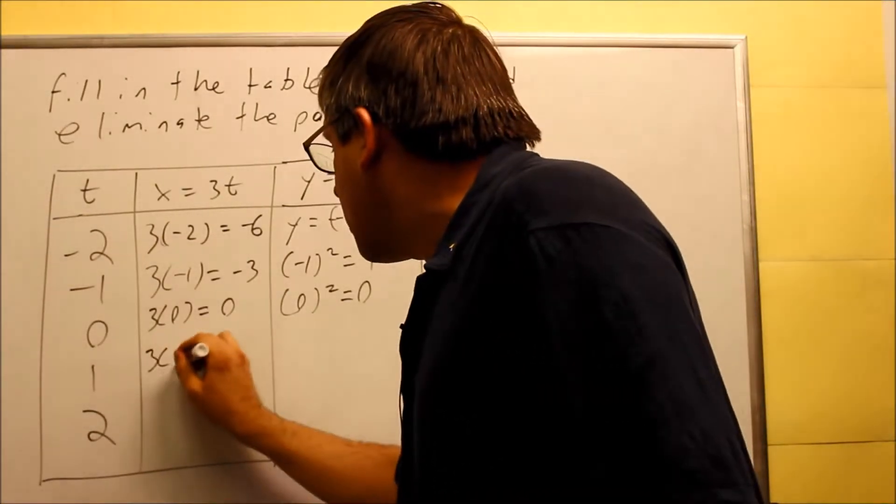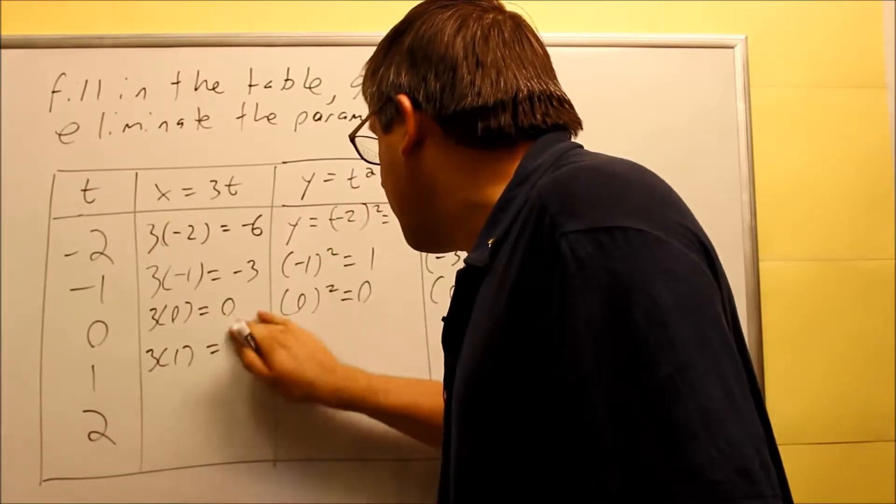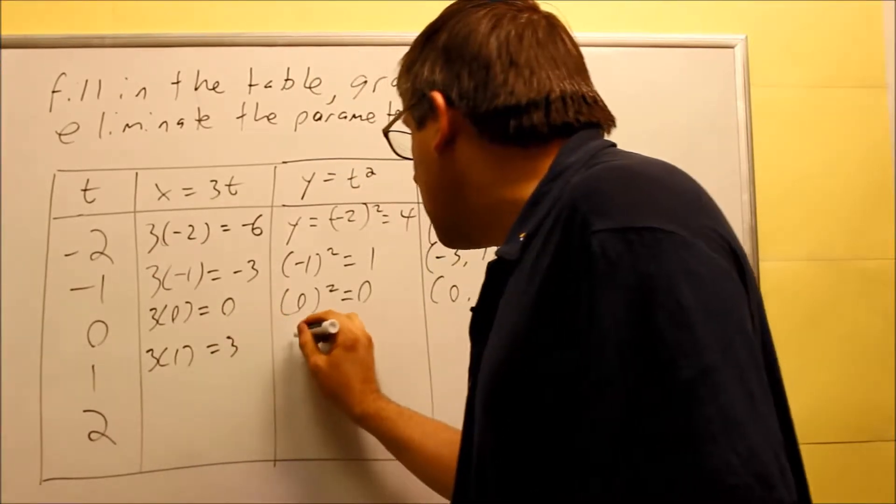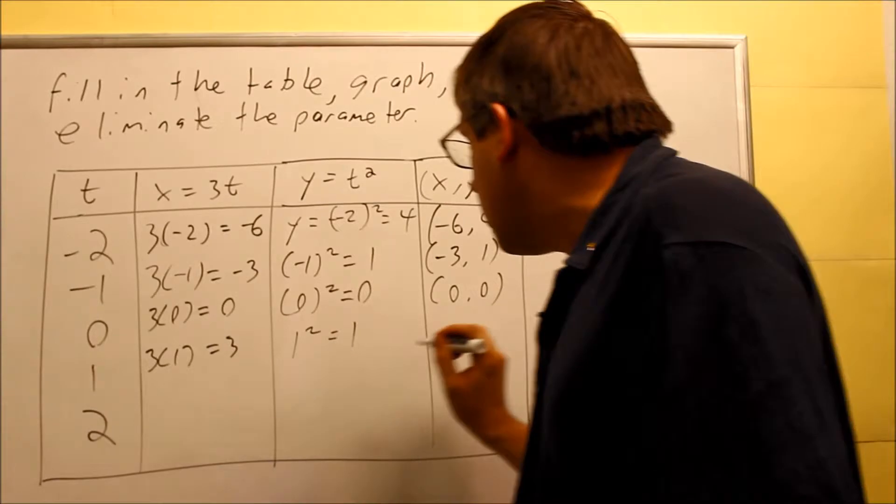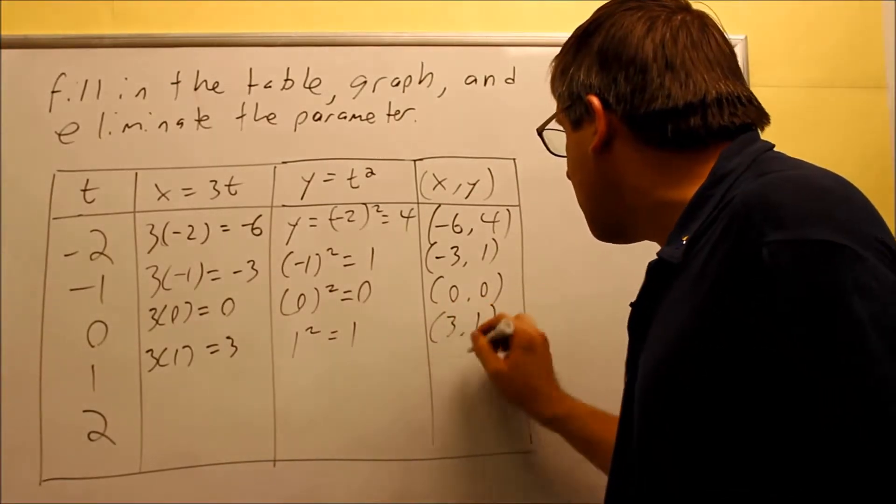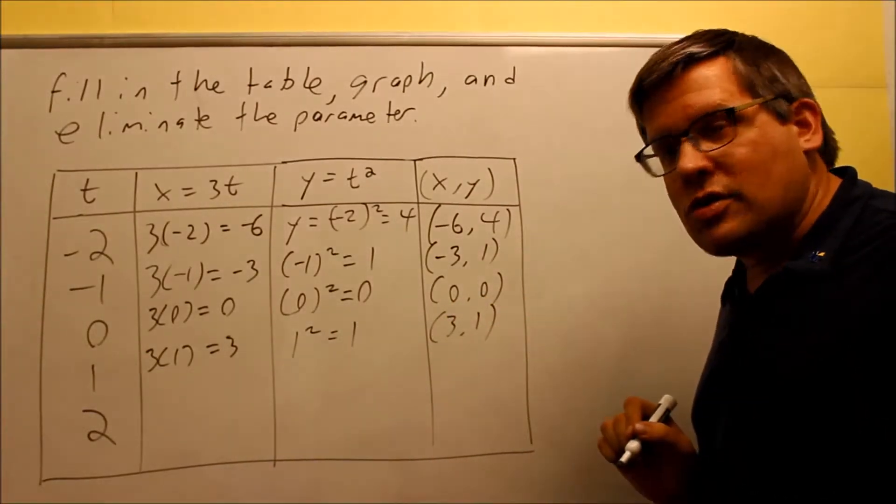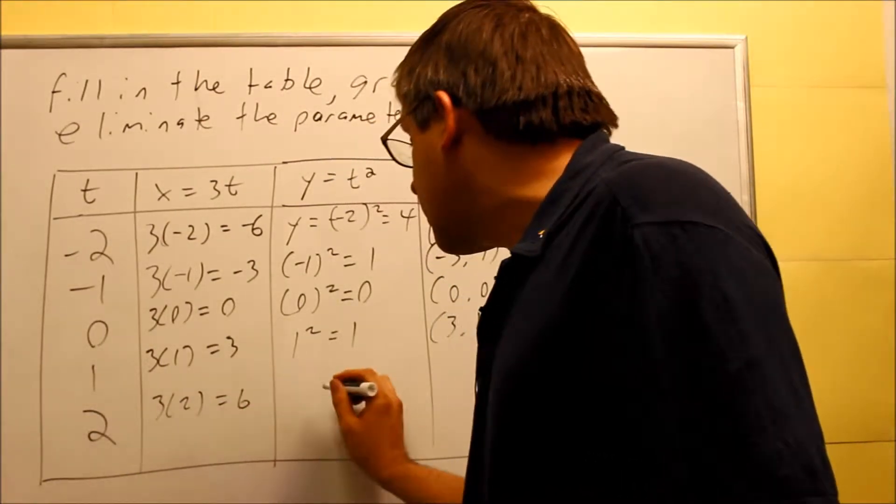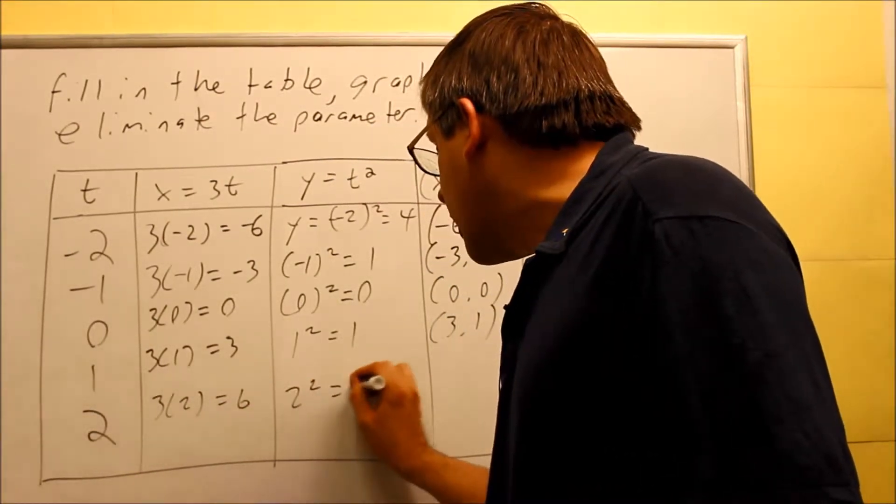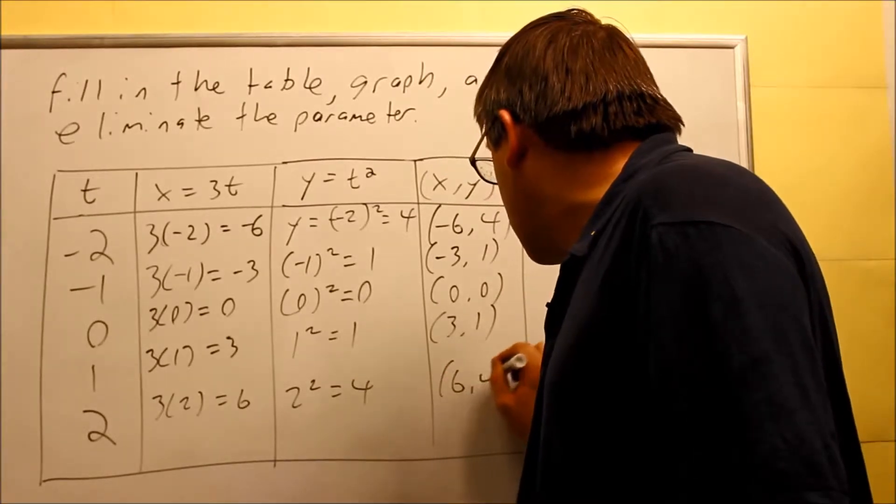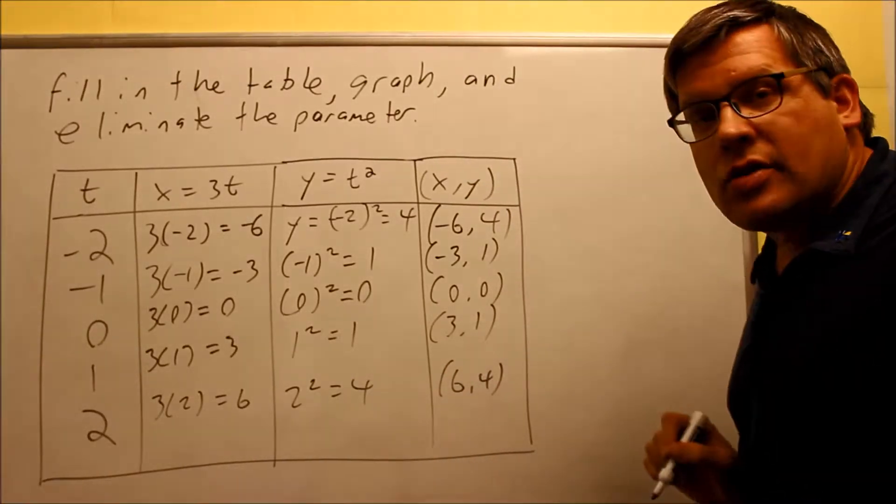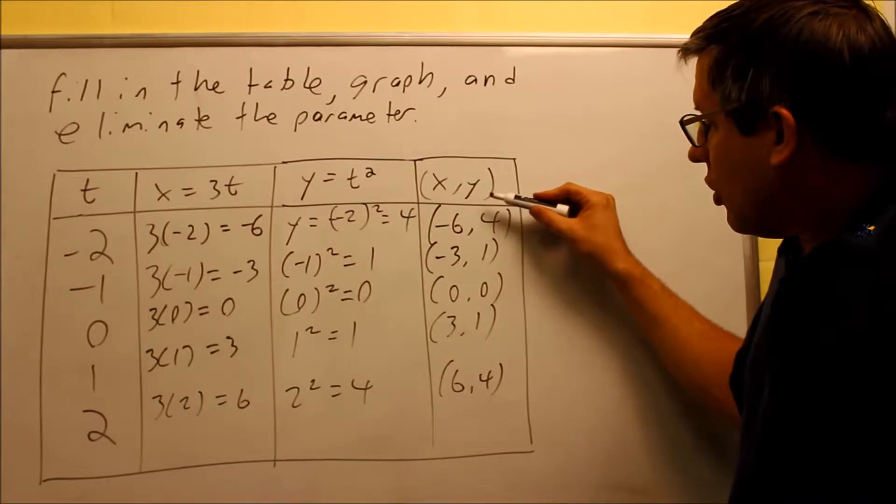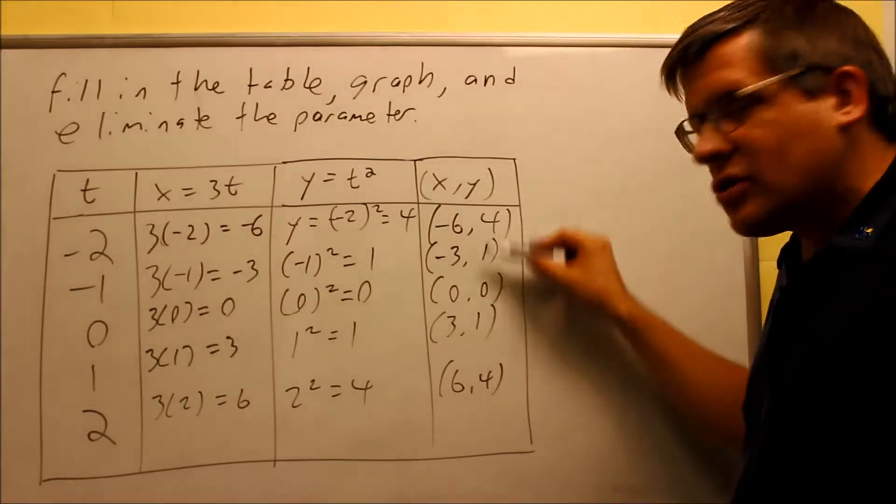Then we have 1, 3 times 1 is 3. And here you have 1 squared, and you get 1. So positive 3 comma 1, that's your next coordinates there. Then we have 3 times 2 is 6, and we have 2 squared is 4. So we get 6 comma 4 as the other coordinate there. So now we have a list of points that are right here.